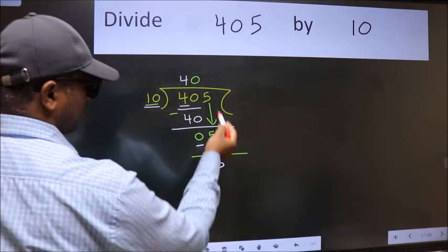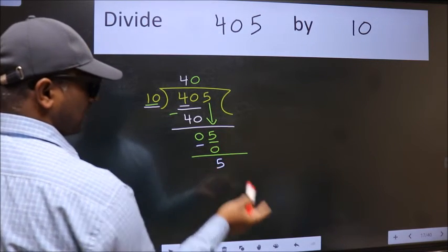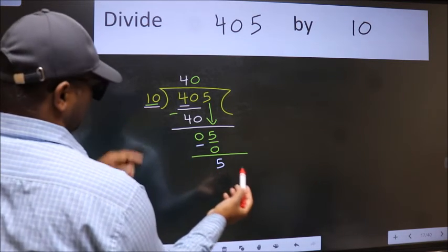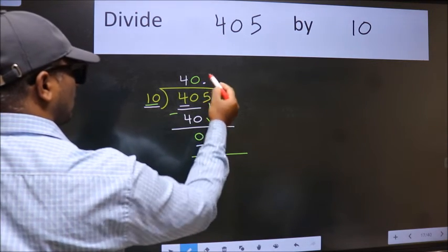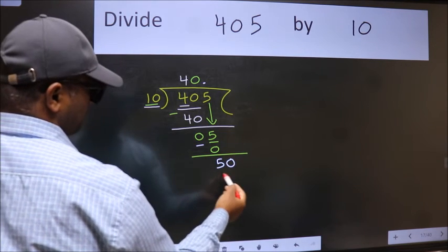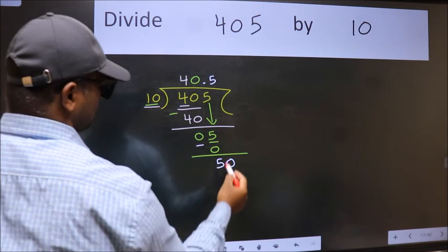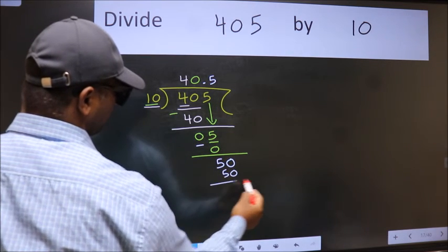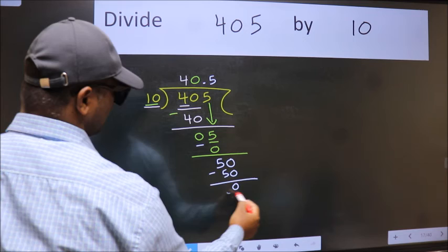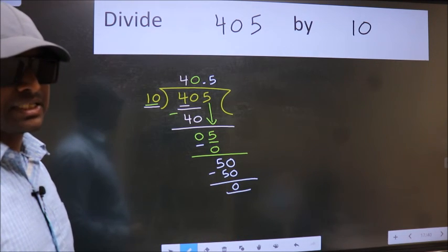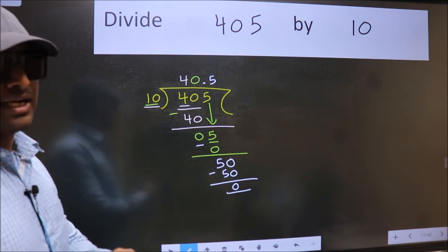Over here we did not bring any number down, and 5 is smaller than 10. So now we can put dot and take 0, so 50. When do we get 50 in the 10 table? 10 times 5 is 50. Now we subtract, we get 0. Did you understand where the mistake happens? You should not do that mistake.